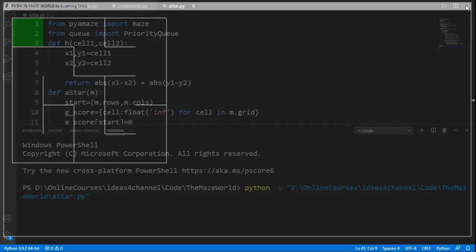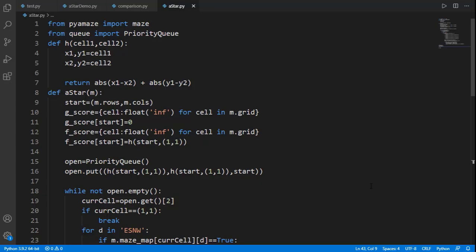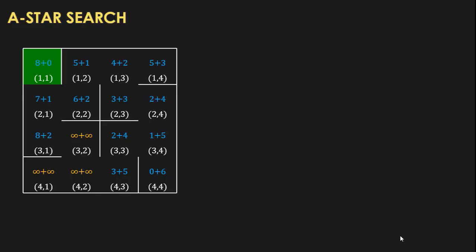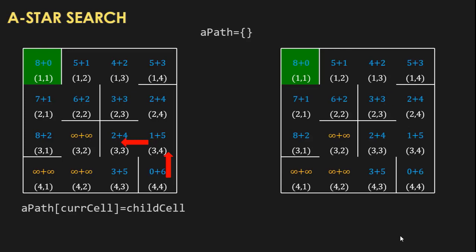We run the code and it appears to be working without errors. Now for the final path from start to goal, we use a dictionary. One approach stores the current cell as key and child cell as value, but this fails because dictionaries cannot have duplicate keys and previous pairs get overwritten. Instead, we store the child cell as key and the current cell as value — this way a cell can appear as a value multiple times without conflict.